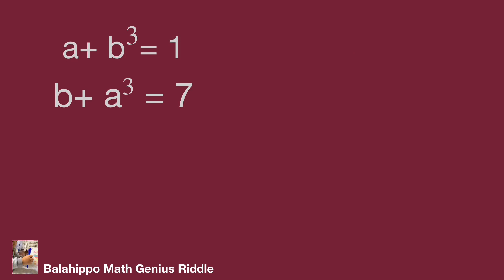We have the given equations: a plus b cubed equal to one, and b plus a cubed equal to seven. We may set a equal to one minus b cubed and substitute a into the other equation. It's a valid way to solve it, but I'm going to find another approach.